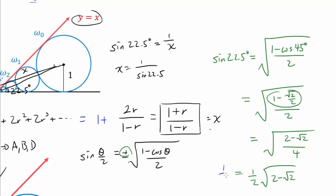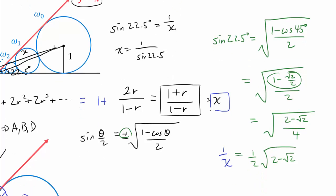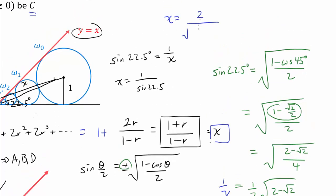So that's 1 over X. But we wish to find just X. So we have to take reciprocal. So we actually care about 2 over square root of 2 minus square root of 2.